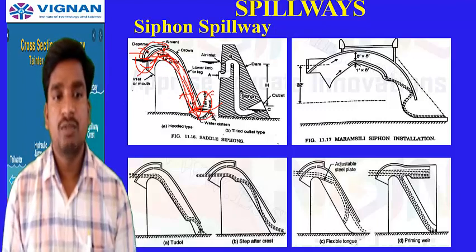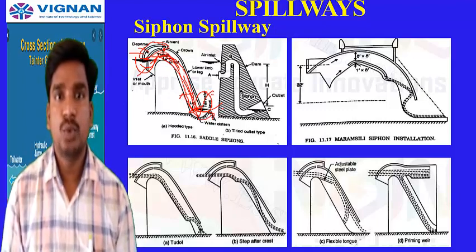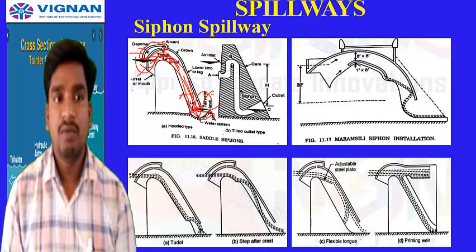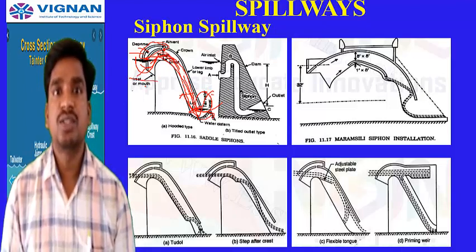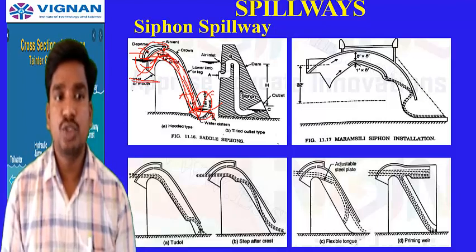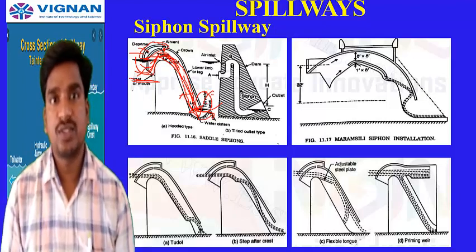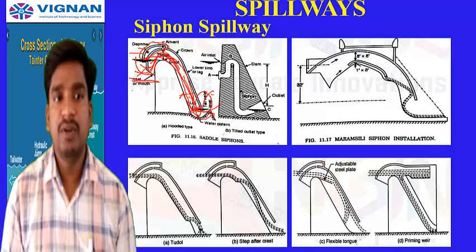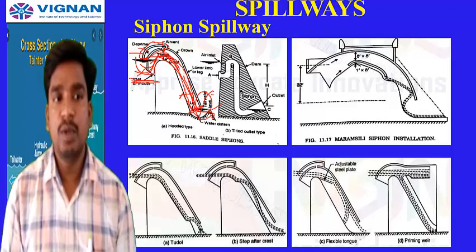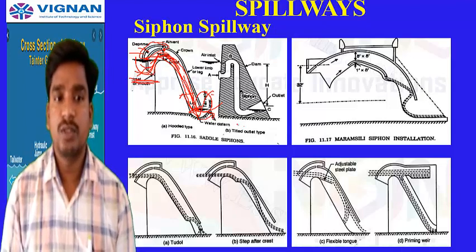The downstream lip is also kept submerged in tail water to prevent air entering from the downstream side. Siphonic action breaks when the water level drops below the reservoir level — air enters the deprimer and the siphon action is broken. This breaking is called depriming, and establishment of siphonic flow is called priming.